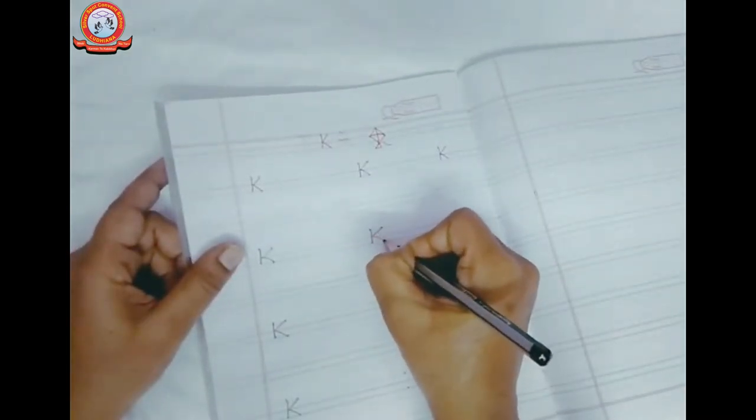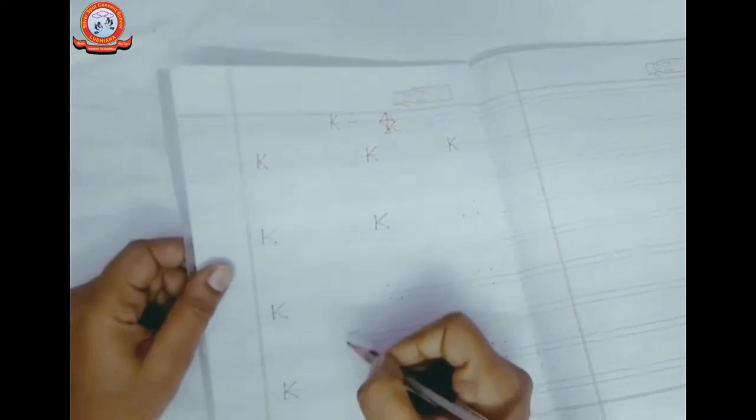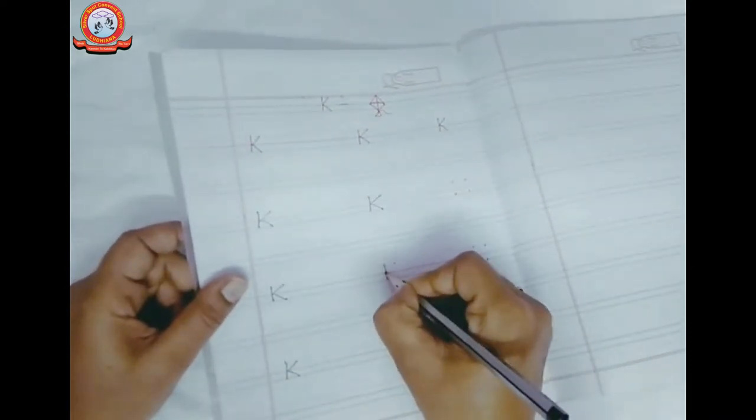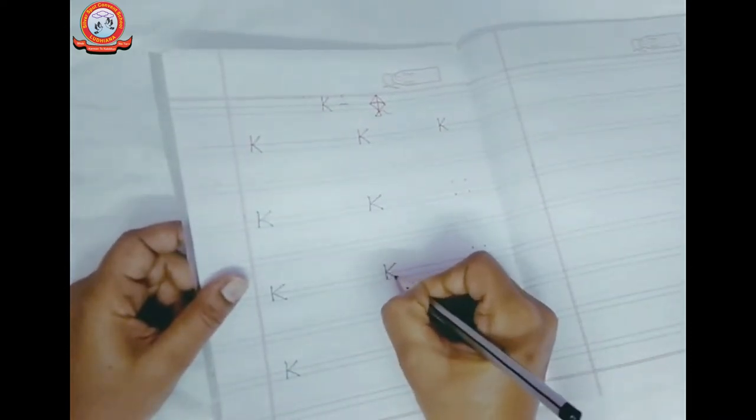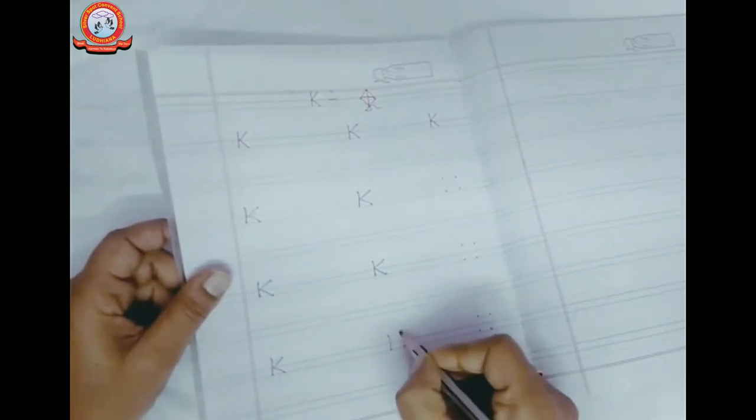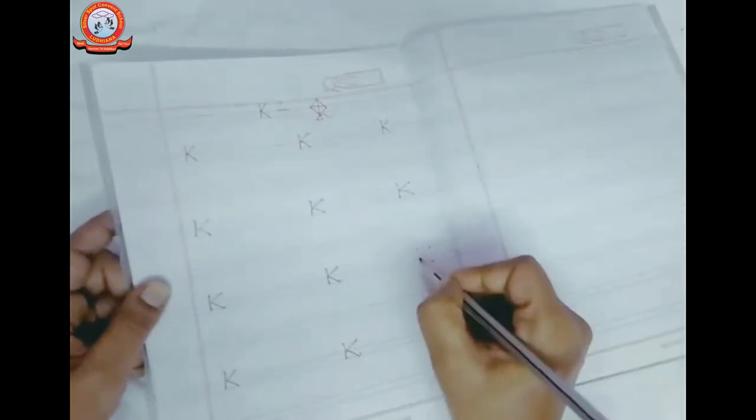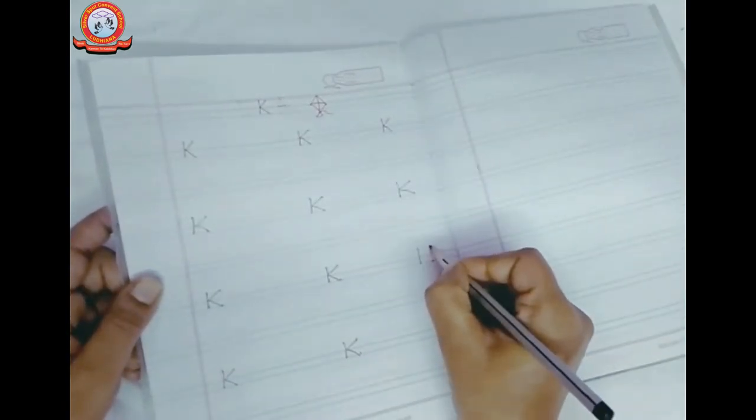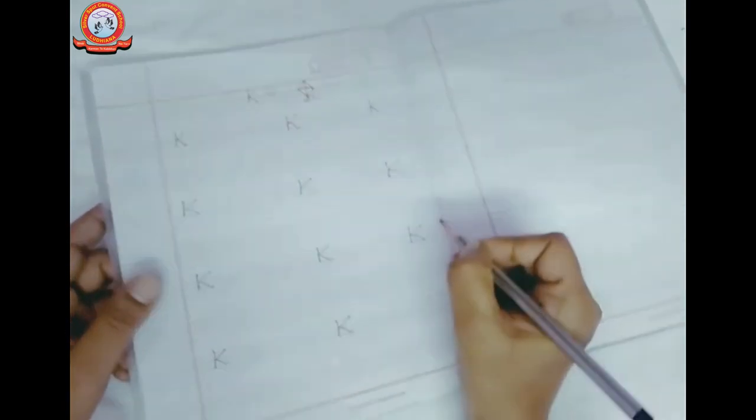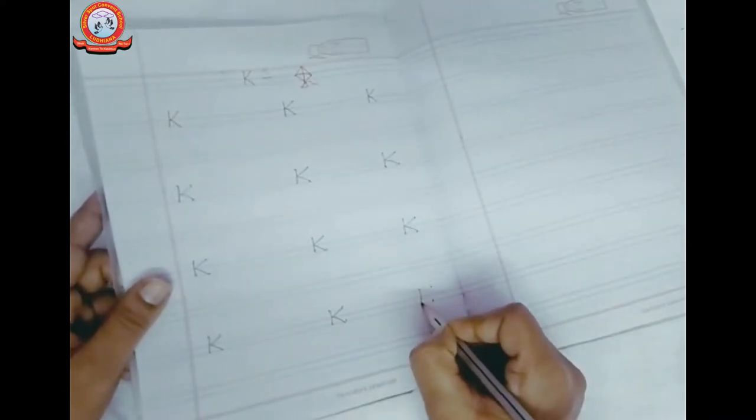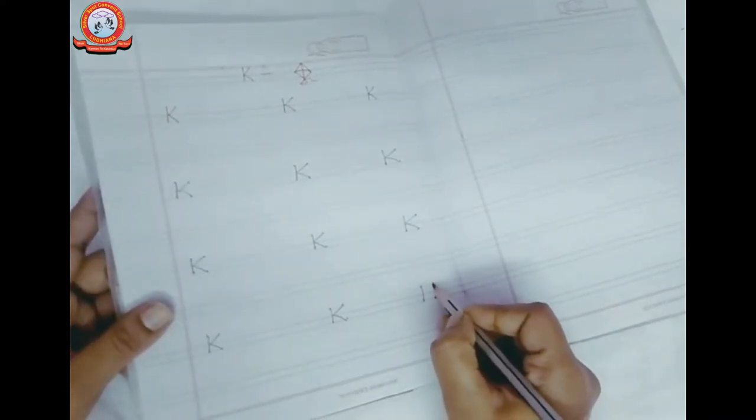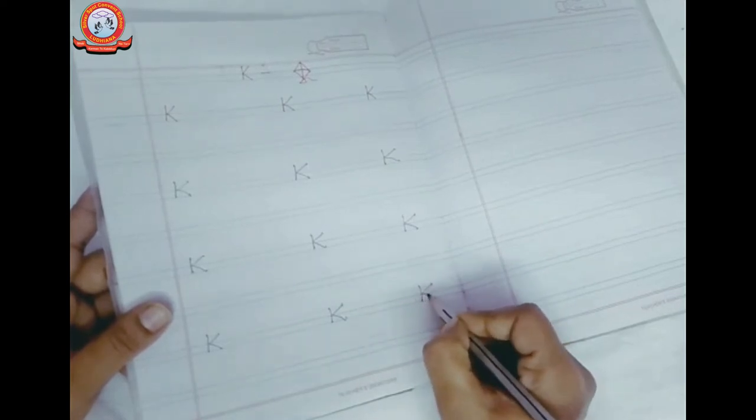K for kite. K for kite. We will not say K, we will call it with a phonics. First we have made a standing line, and then from this dot, this black line will touch it like this and this will become our letter K.